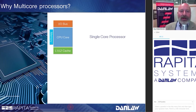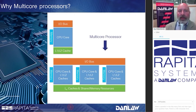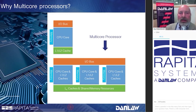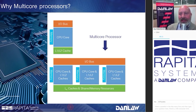The single core limits the speed at which increasingly complex application software can execute. Adding multiple cores will increase throughput. Multi-core processors are meant to handle concurrent workloads. Conceptually, the single processor core is extended by adding CPU cores, local memory, and private caches, and then other resources such as the I/O bus, more memory, and caches are extended and shared.